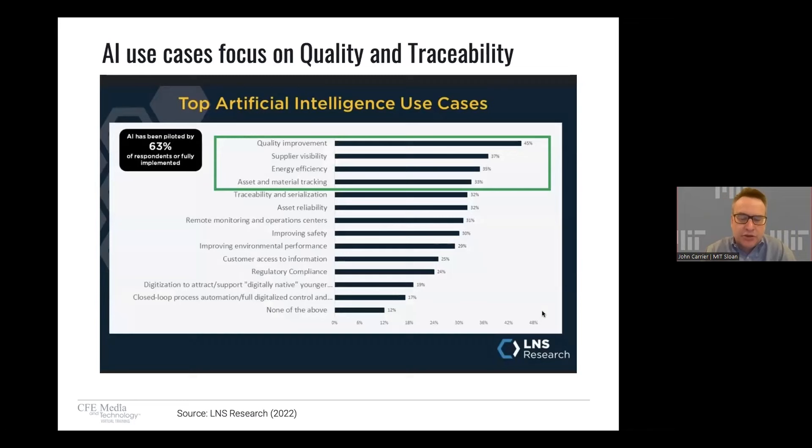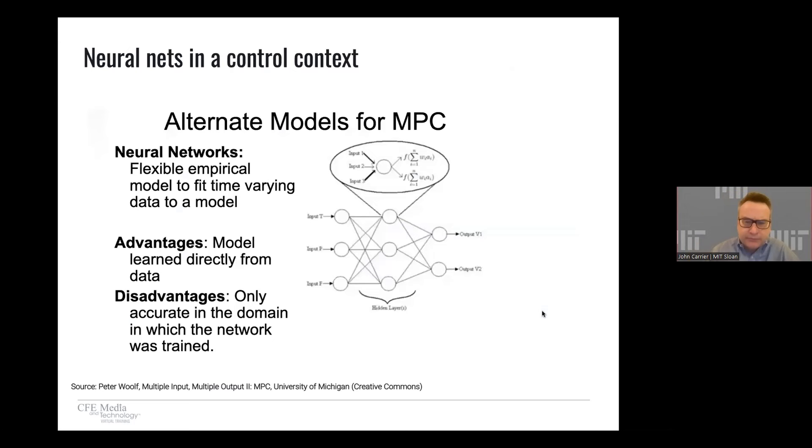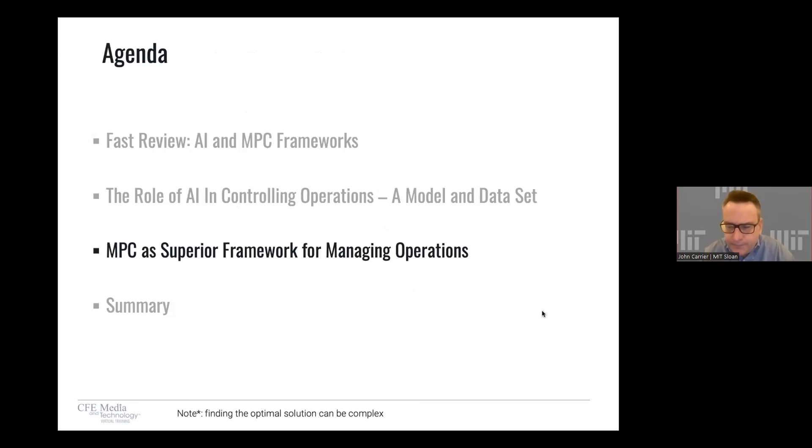Just to end, the research shows this is survey data collected this year, in terms of artificial intelligence use cases, AI is most effective in quality improvement, supplier visibility, and asset material tracking. All those things we're doing visual recognitions in a controlled environment. You'll notice where it's the poorest at the bottom, closed loop process automation and digitized control. The reason why is because real systems have changing boundaries, they have noise, and they can never be modeled perfectly.